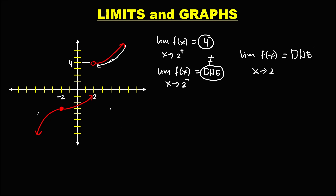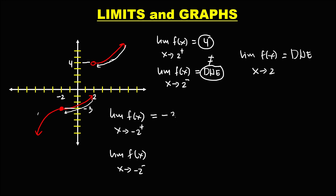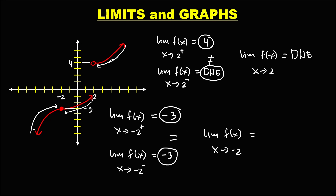For the limit of f(x) as x approaches negative 2 from the right, and also from the left: for the right side limit, x approaches negative 2 from the right, and the limit is equal to negative 3. For the left side limit, x approaches negative 2 from the left. Since the right side limit is equal to the left side limit, therefore this limit is also equal to negative 3.